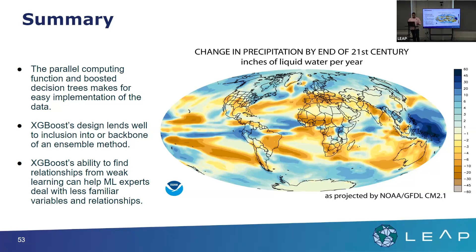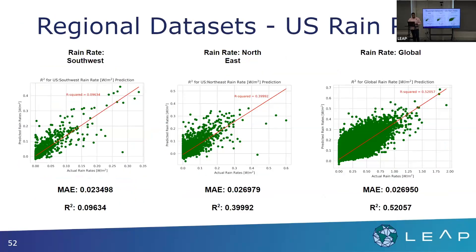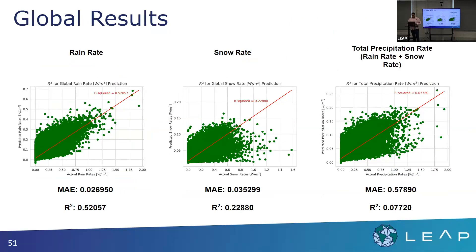Looking at the snow rate, I believe the reason it was a lot lower was because there are more complicated subgrid processes that happen in relation to snow, especially with that small threshold between freezing and liquid water that would impact snow, whereas rain is maybe a little bit easier to predict because there are fewer background processes that make it so variable.